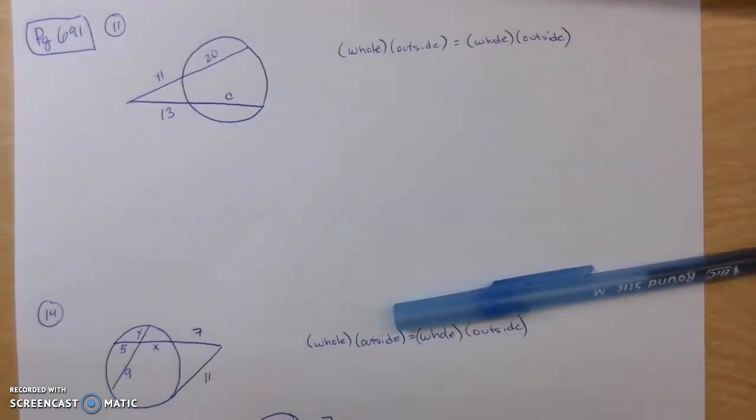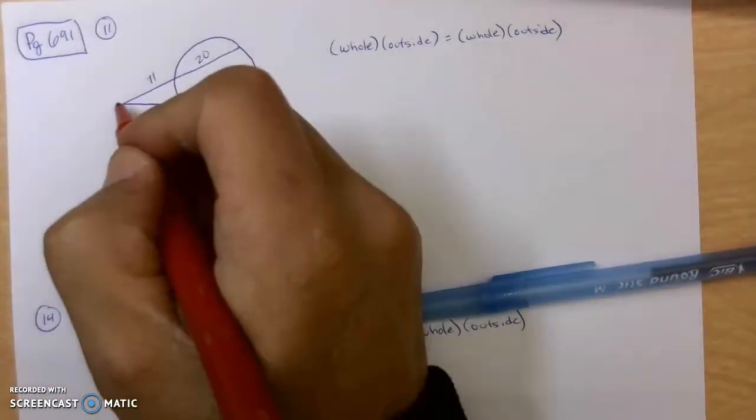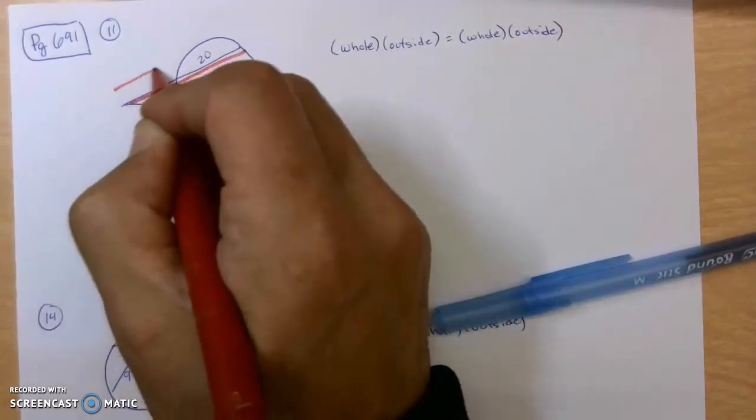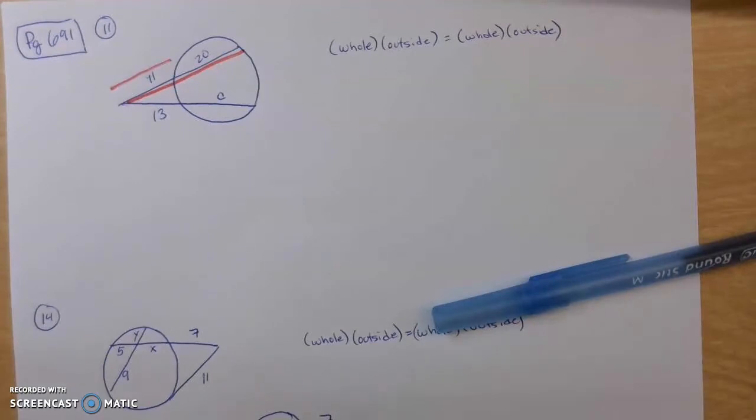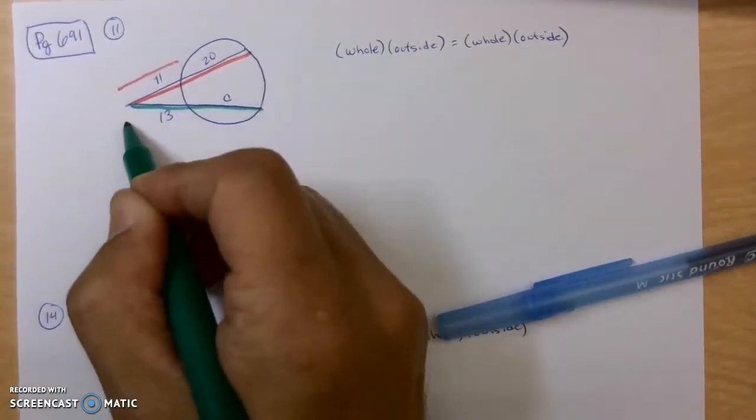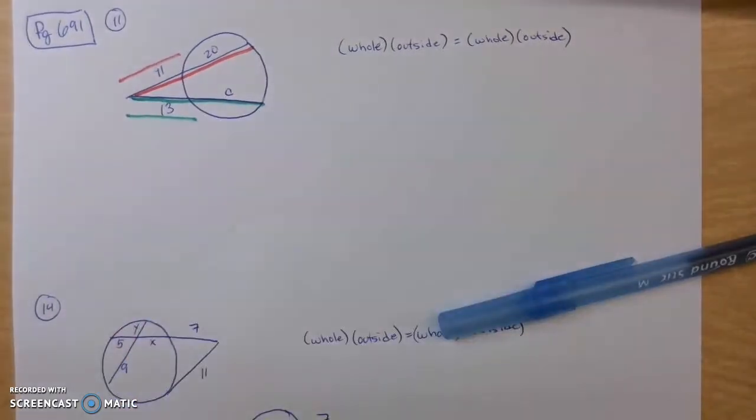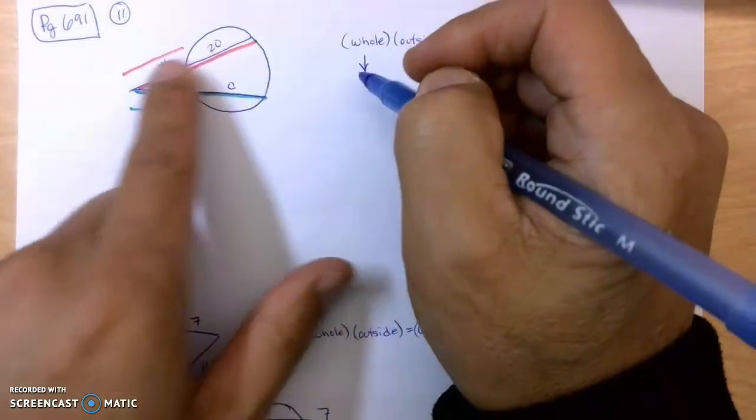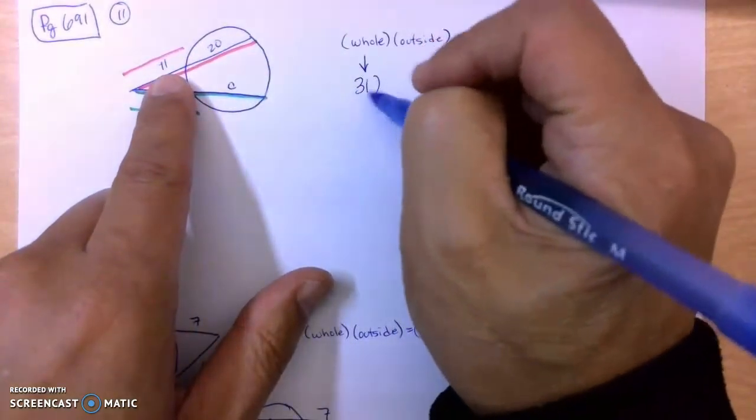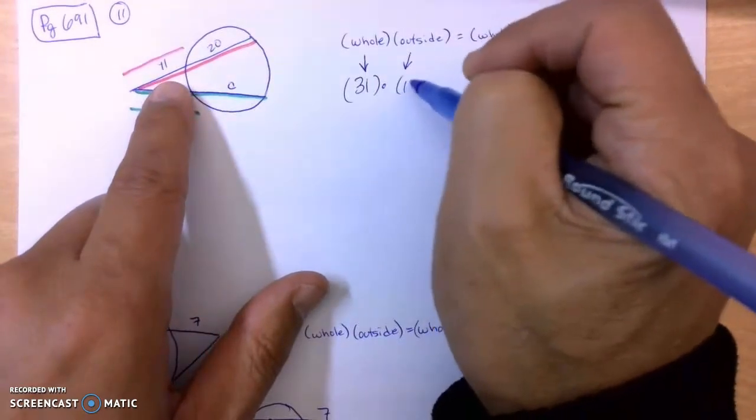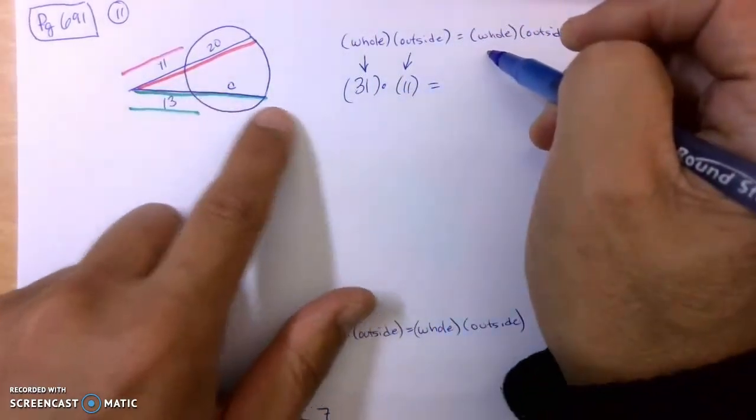So this line here, the whole line here in red times just the outside portion in red, and then that will equal this whole line here in green times just the outside portion, and that's the basic setup. So the whole line here in red is 20 plus 11, that's 31, times just the outside portion in red, which is 11.